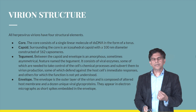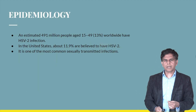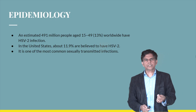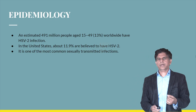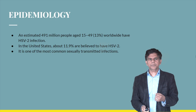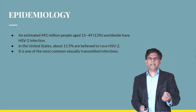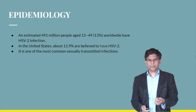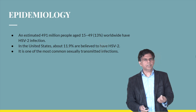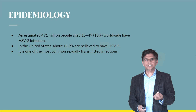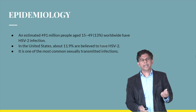Looking at the epidemiology, a huge number of patients worldwide are infected with herpes 2 — an estimated 491 million people aged 15 to 49, which is around 13% of the global population. In the United States, about 11.9% are believed to have HSV2, making it one of the most common sexually transmitted diseases.